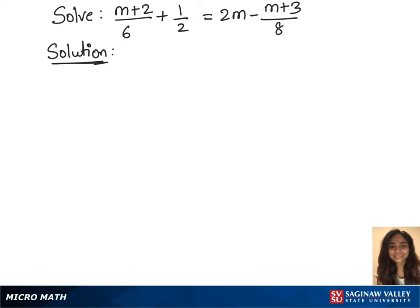To solve this equation m plus 2 by 6 plus 1 by 2 equals 2m minus m plus 3 by 8, we first need to know the least common denominator of all the denominators 6, 2, and 8. The LCD of 6, 2, 8 is 24.